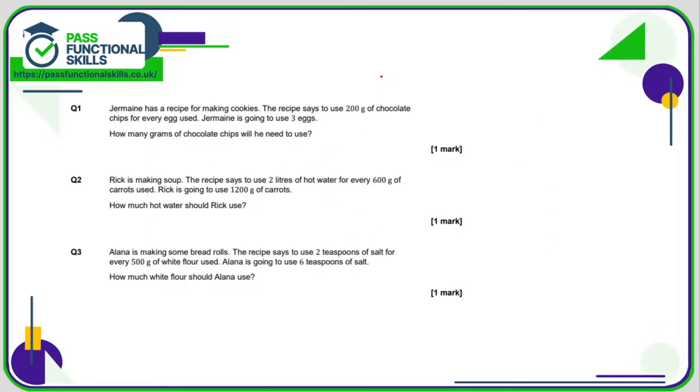So Jermaine's got a recipe that has 200 grams of chocolate for each egg. If he's using three eggs, he's tripled the number of eggs, so he's going to need triple the chocolate as well, and three times 200 is 600 grams of chocolate.